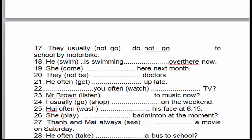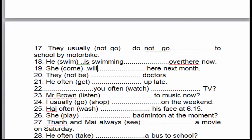Câu số 19: 'She will come here next month.' Cô ấy đến đây vào tháng tới. 'Next month' là chưa xảy ra, cho nên nó diễn tả sự kiện sẽ xảy ra trong tương lai — thì tương lai đơn. Chúng ta chỉ cần thêm 'will' trước động từ nguyên mẫu → 'will come'.